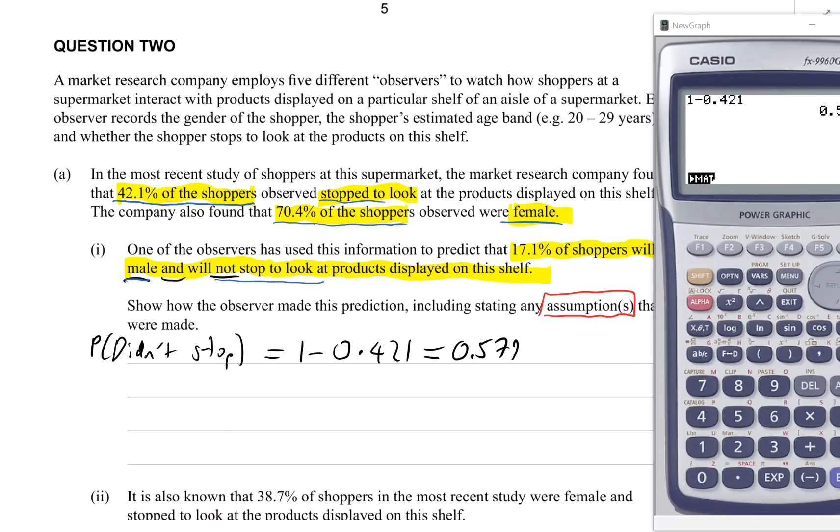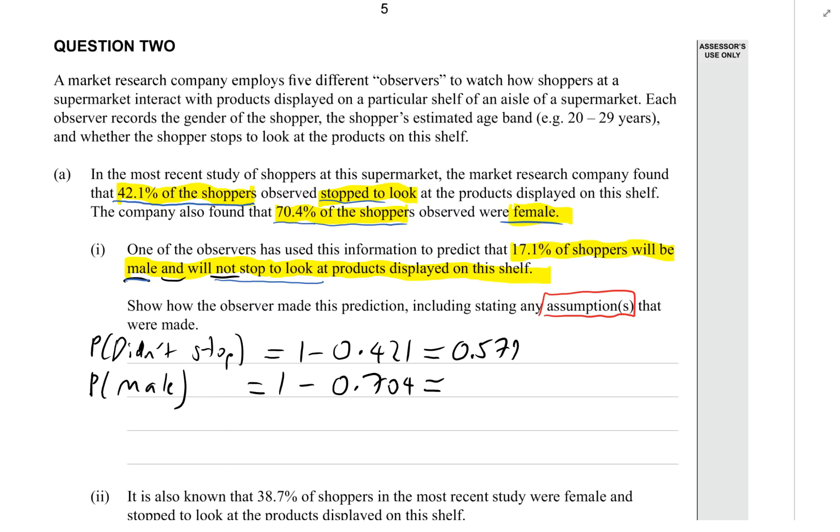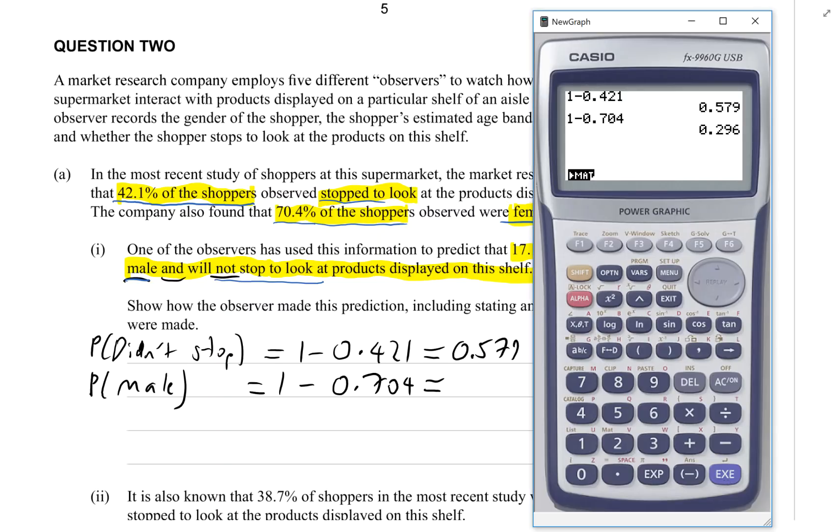The next thing we need to find is the proportion who were male. If we assume they're either male or female, then if 70.4% of the shoppers were female, 29.6% or 0.296 were male.